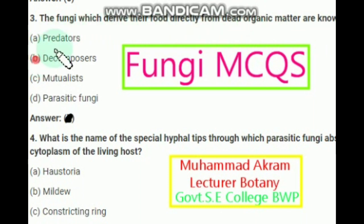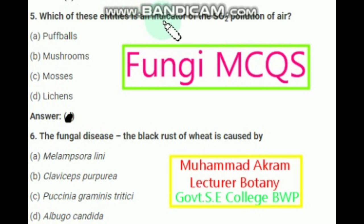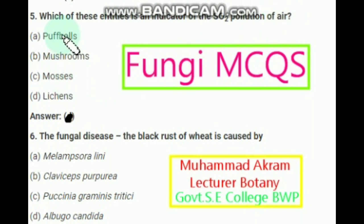The next question is: which of these entities is an indicator of sulfur dioxide pollution of air? Lichens. They indicate sulfur dioxide pollution in air.